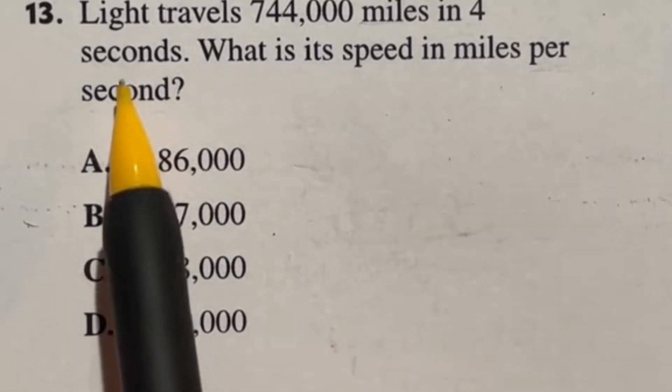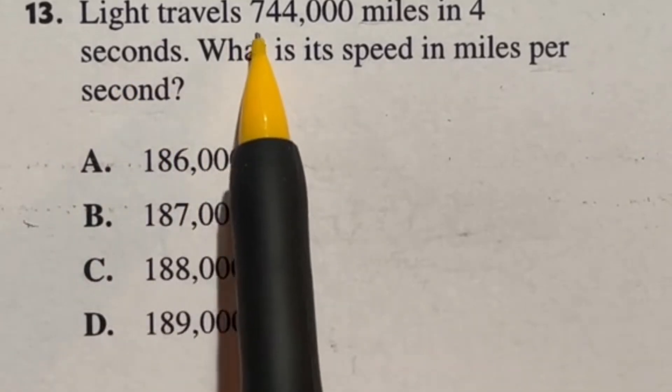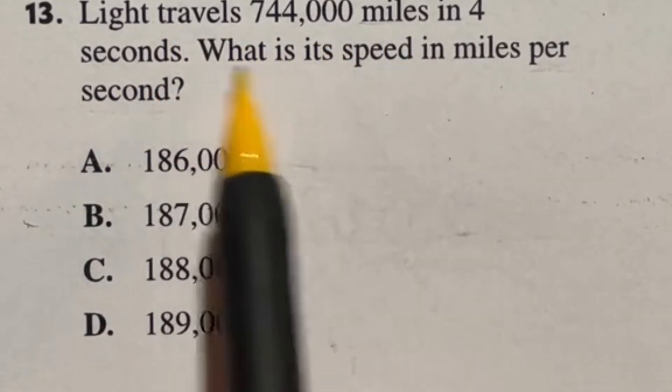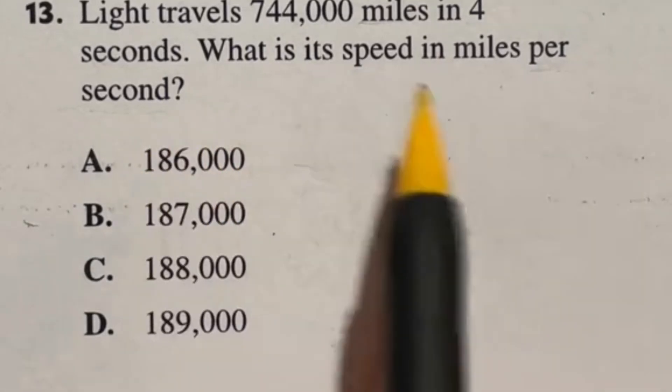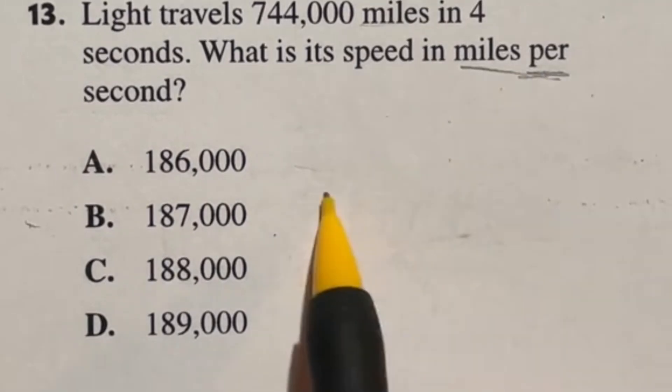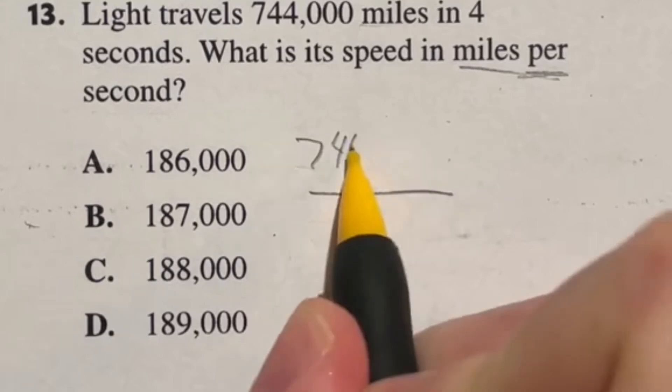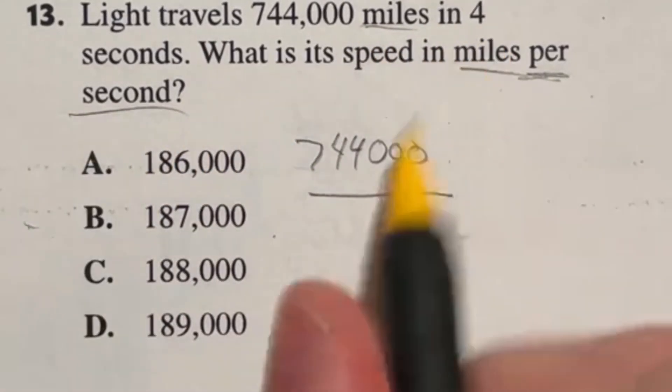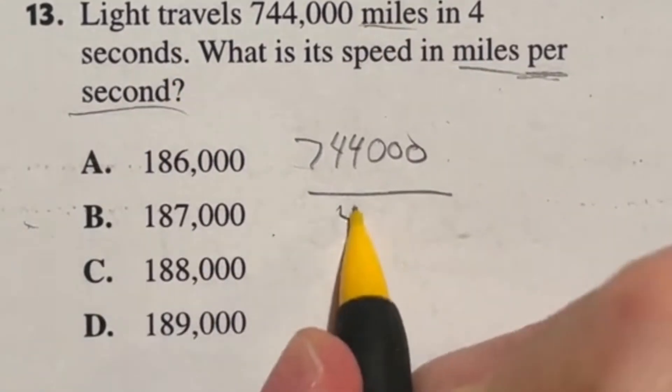We're looking at number 13 on the ASVAB military entrance exam. We're seeing here that light travels 744,000 miles in four seconds. What's its speed in miles per second. Now remember this secret word per here means that we're dividing miles. It looks like it is on top. So we're going to do 744,000 on top because that's our miles. And then on bottom, we got the seconds, which we have four seconds here. So we're doing that.